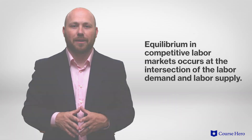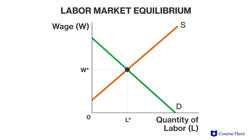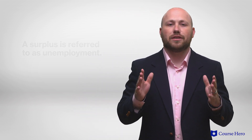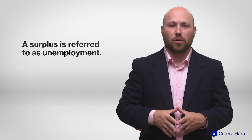Equilibrium in competitive labor markets occurs at the intersection of labor demand and labor supply. In this model, there is no involuntary unemployment since every unit of labor willing to work at the equilibrium wage gets hired. If wages are below the market wage, a shortage of labor occurs, while a surplus of labor occurs when wages are higher than the market wage. In this context, a surplus is referred to as unemployment.